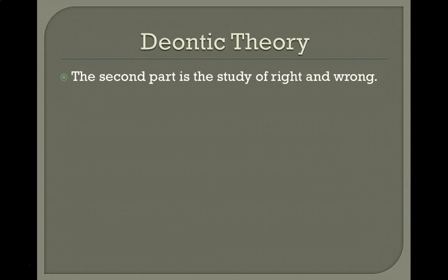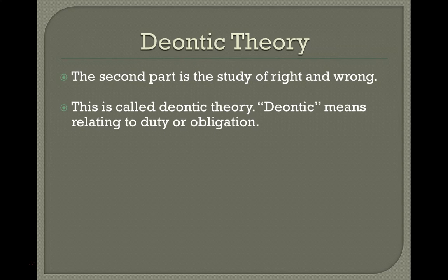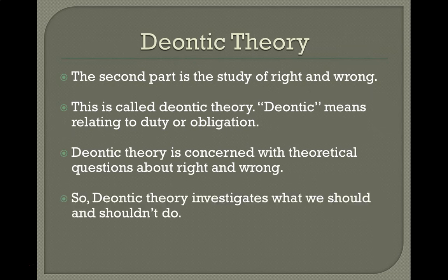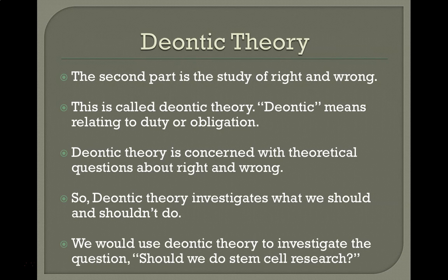The second part is the study of right and wrong — this is called deontic theory. Deontic, as I said earlier, means relating to duties or obligation. Deontic theory is concerned with theoretical questions about right and wrong; it investigates what we should and shouldn't do. We would use deontic theory to investigate the question: should we do stem cell research?